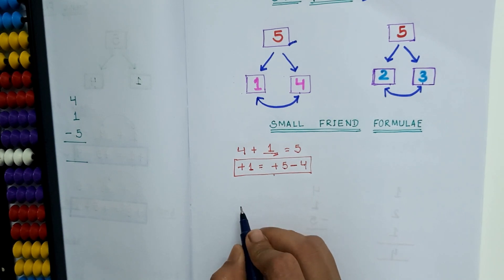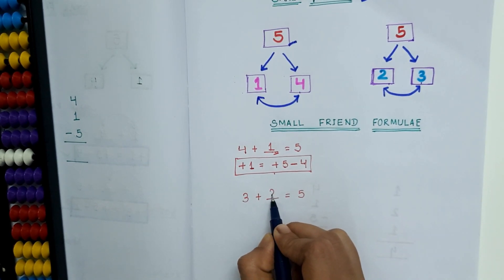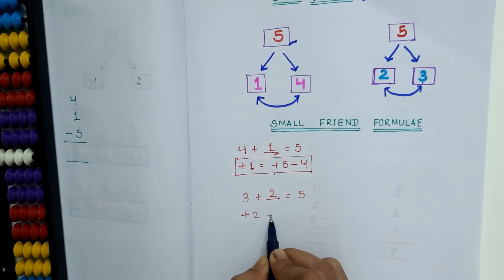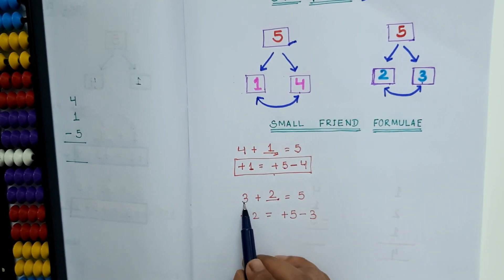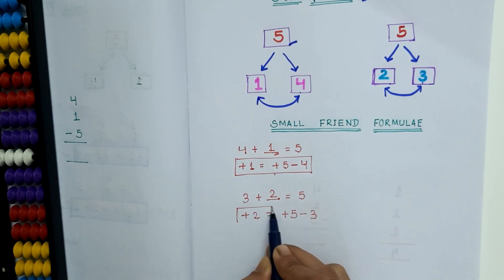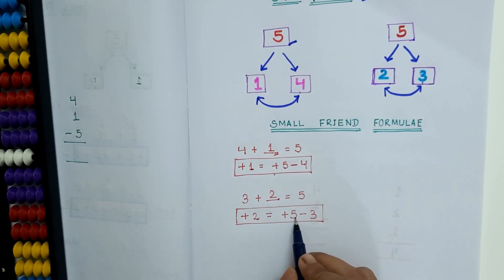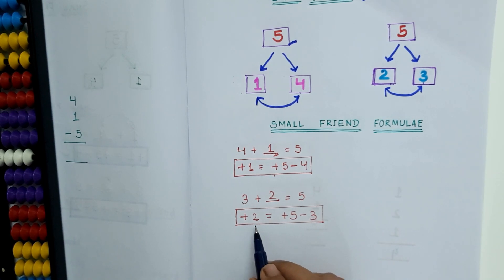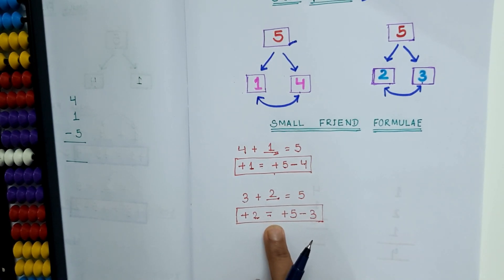Let's derive another one. 3 plus how much equals to 5? We know that 3 plus 2 equals to 5. How do we get this answer 2? Plus 2 equals to plus 5 minus 3. If we subtract 3 from 5, we will get the answer 2. So now we have the second formula: plus 2 equals to plus 5 minus 3. This is the second small friend addition formula.